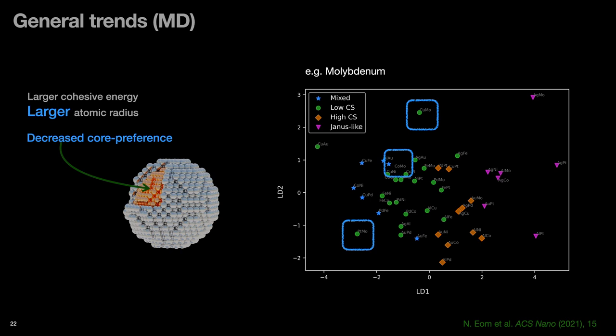This trend was seen in, for example, some of the combinations of molybdenum, because it has unusually large atomic radius compared to its large cohesive energy.